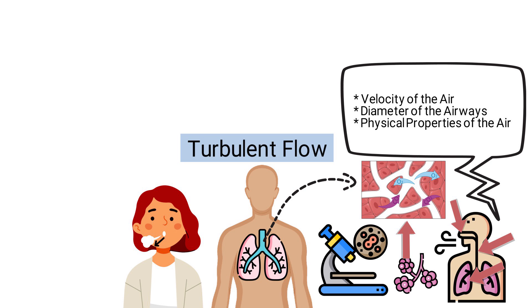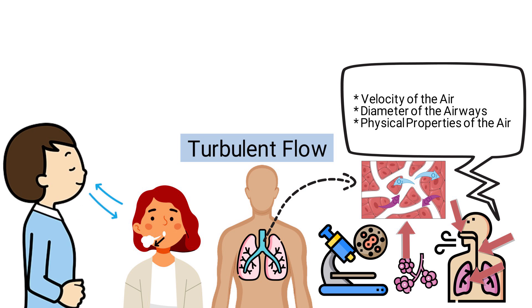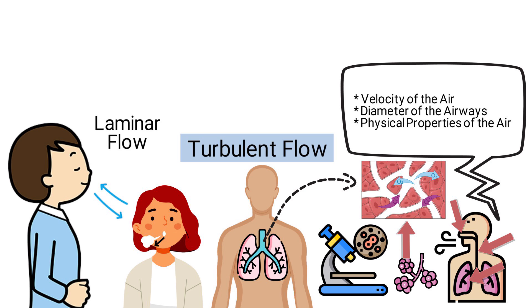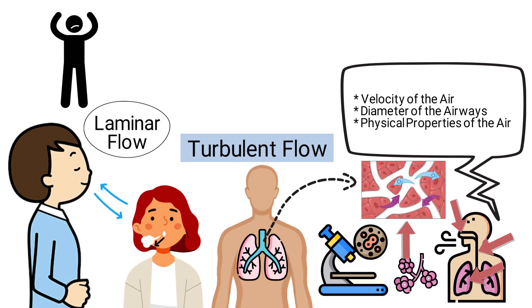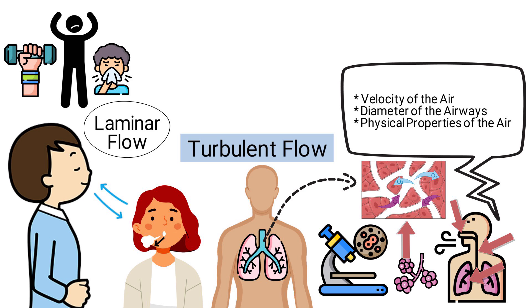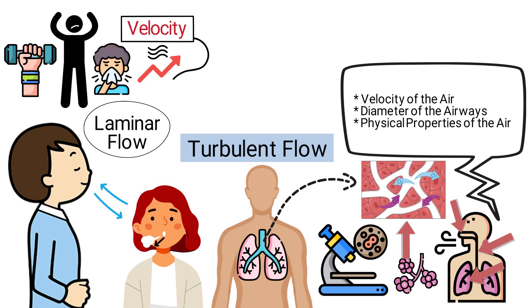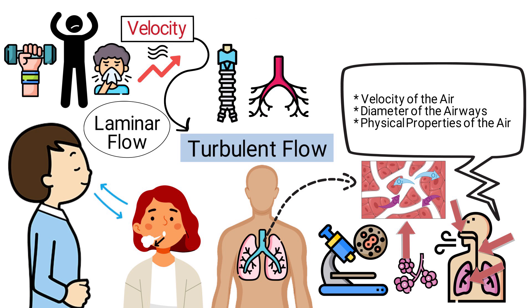During normal quiet breathing, airflow in the lungs is predominantly laminar. However, during vigorous activities or forceful breathing, such as exercise or coughing, the velocity of airflow increases significantly, leading to the onset of turbulent flow, especially in the larger airways like the trachea and the main bronchi.